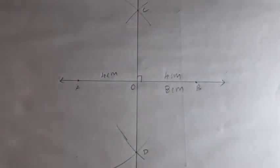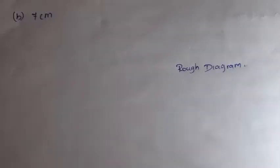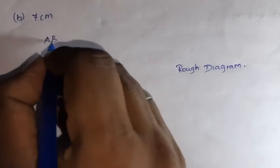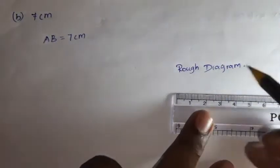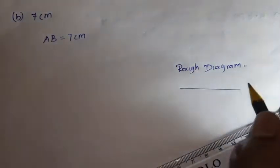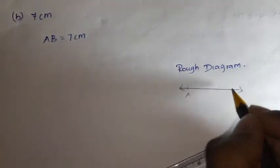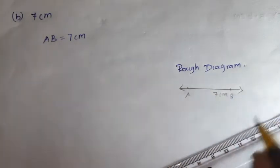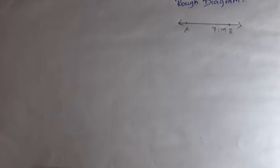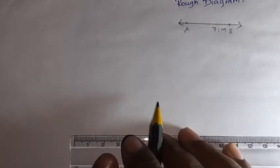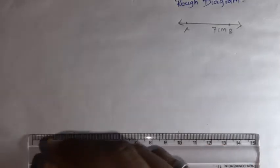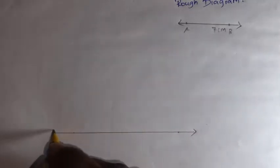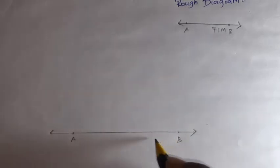So next, Exercise 5.3, question number 1b. What is given? 7 centimeters is given. AB equals 7 centimeters. The main diagram. Point A. Point B equals 7 centimeters. Main diagram. 7 centimeters. Zero mark the dot. 7, mark the dot. Next, draw the line.